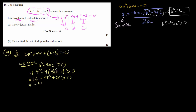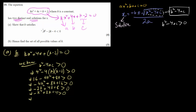Arranging this gives minus 4k squared plus 8k plus 16 greater than 0. Dividing by 2 gives minus 2k squared plus 4k plus 8 greater than 0. Dividing again by 2 gives minus k squared plus 2k plus 4 greater than 0. To prove this expression, we multiply by negative 1, which reverses the inequality sign, giving k squared minus 2k minus 4 less than 0. That is what we have shown - done.